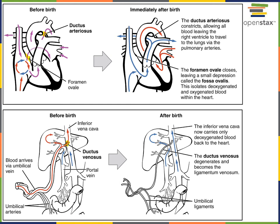After birth, the ductus arteriosus will constrict, allowing the blood leaving the right ventricle to travel into the pulmonary arteries to become oxygenated in the lungs.